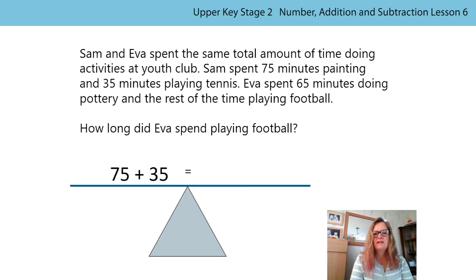Okay, I wonder if anyone used the balanced representation like I've done. So I've got Sam's activities here, 75 minutes and 35 minutes. It doesn't really matter what they were doing, it's the numbers I'm interested in. And we know that Eva spent 65 minutes and we don't know how long she spent playing football. So this is my representation of all those words. And in math, sometimes the words are confusing. It's really important if we can to get a calculation from the words to really help us see the relationship and the structure between the numbers.